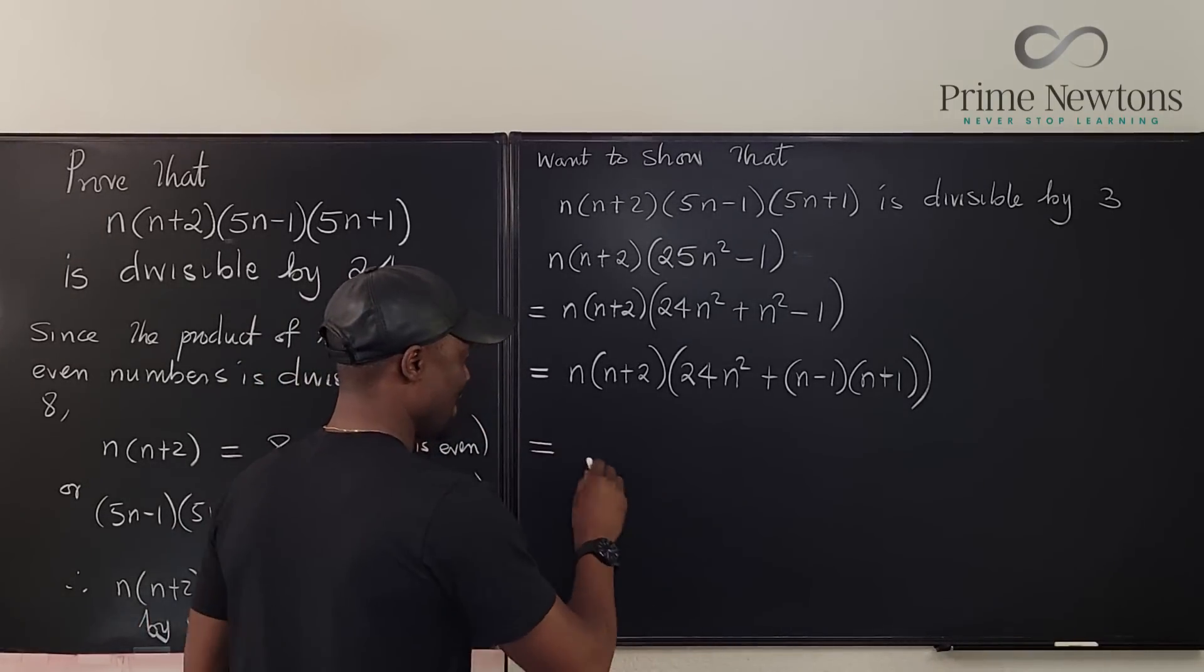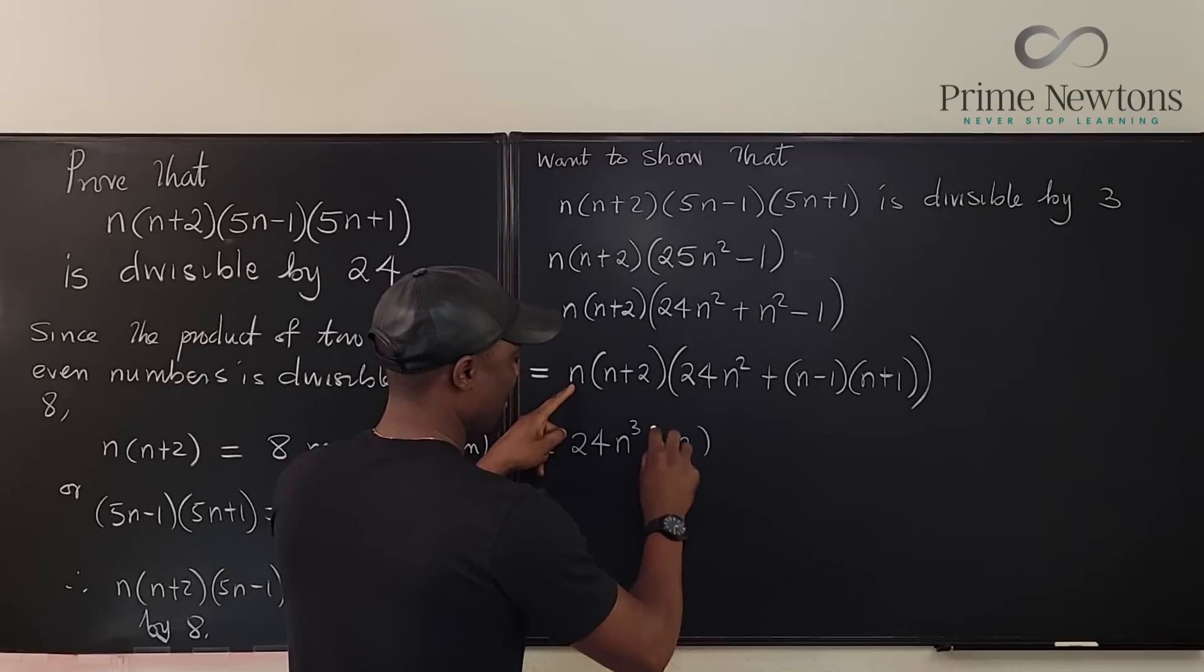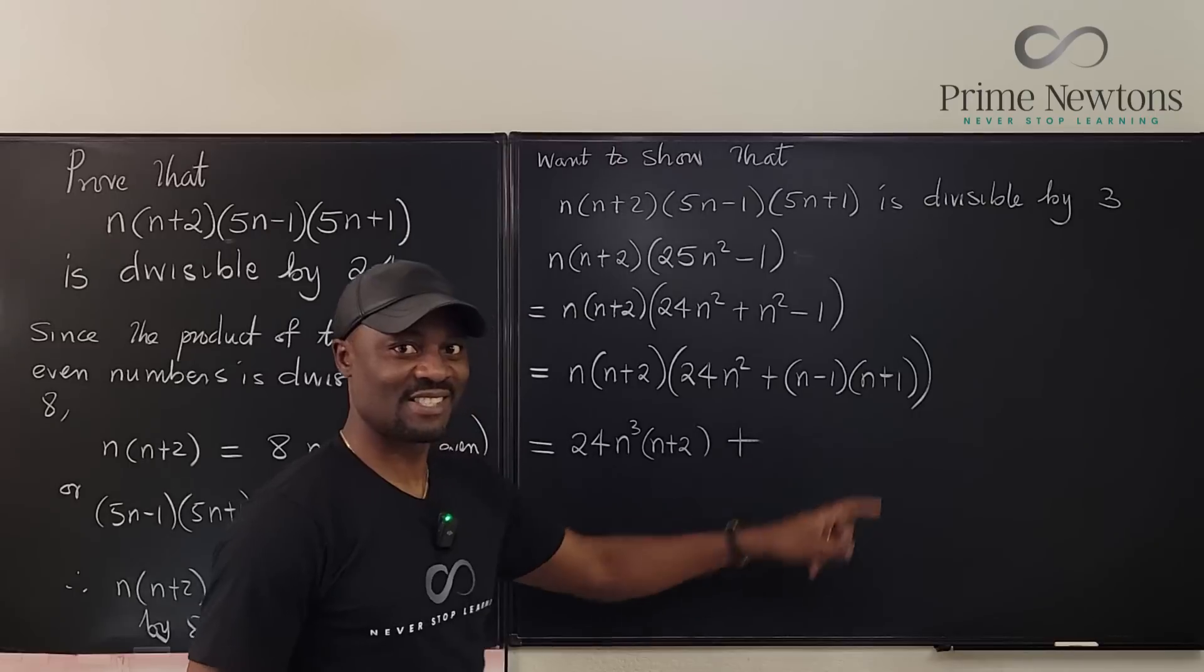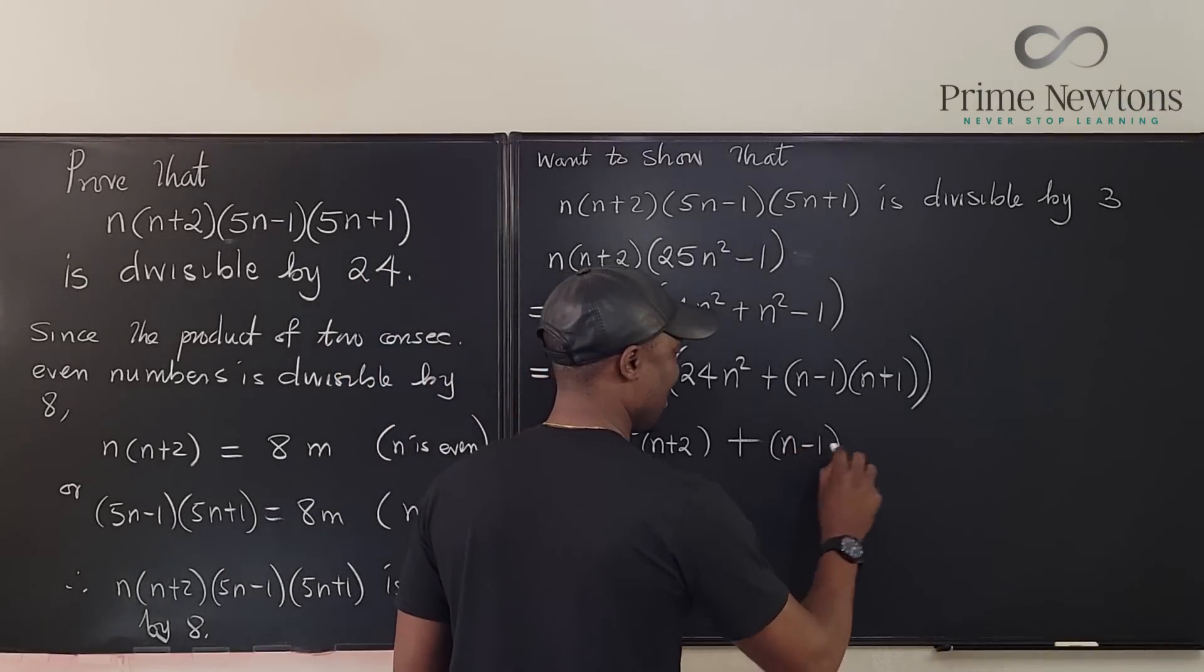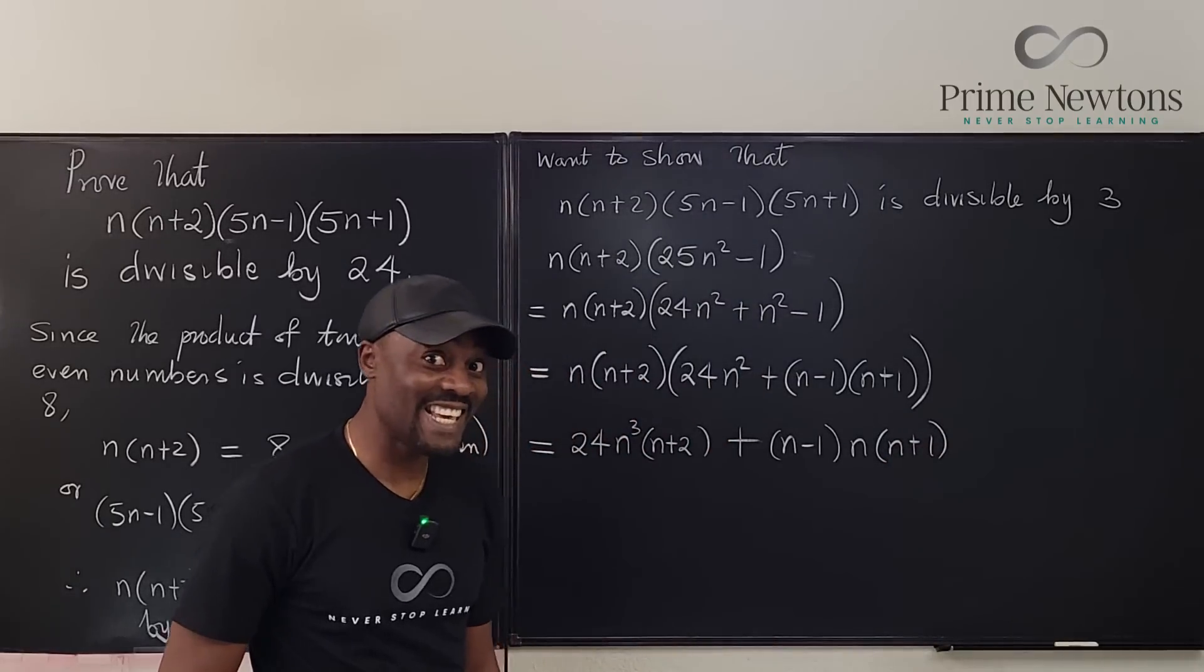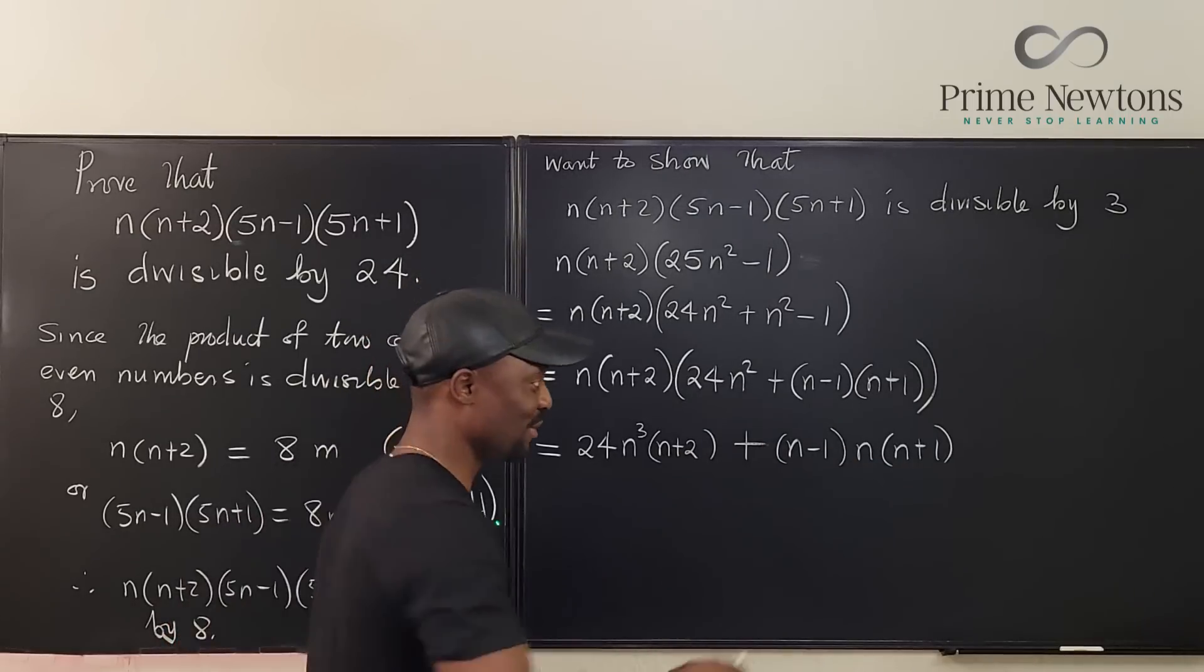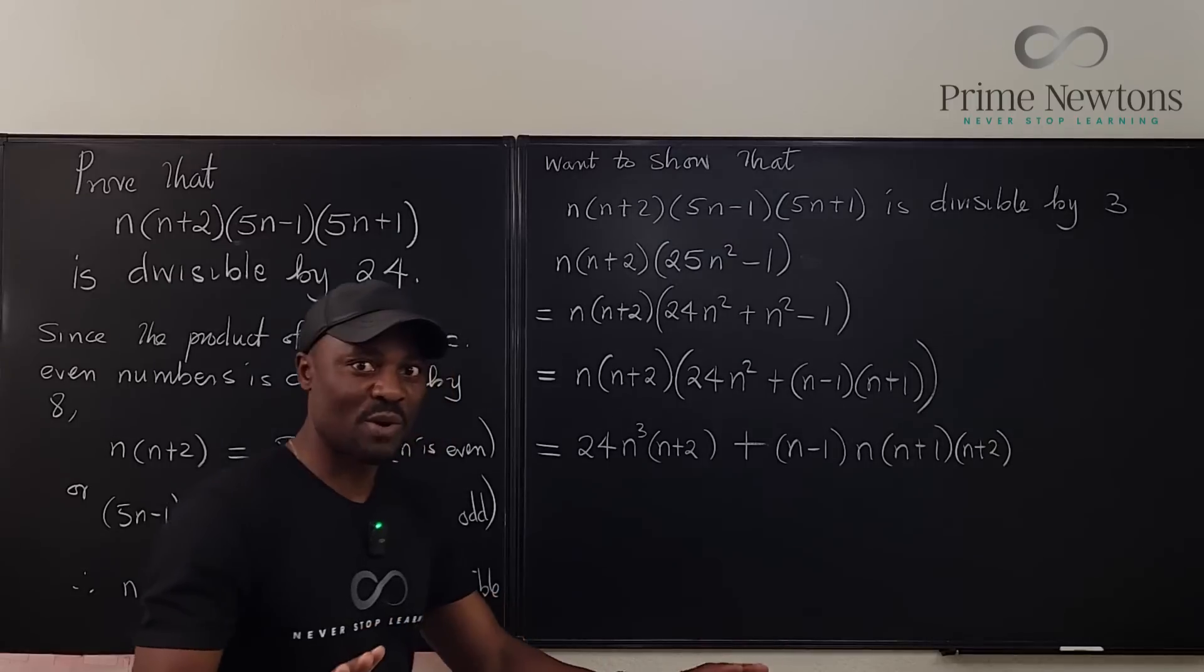Now I'm going to take this and multiply what I have here and see what it looks like. This is going to be 24n cubed n plus 2 plus this times this times this. Look at what you see. It's going to be n minus 1 times n times n plus 1. Do you see what I see? Oh there's something missing here. I forgot to put the n plus 2. So it's going to be n plus 2.